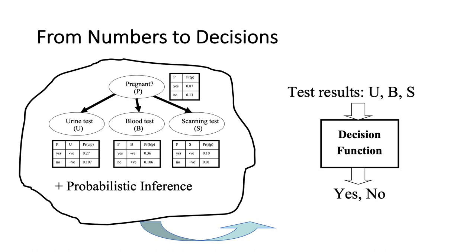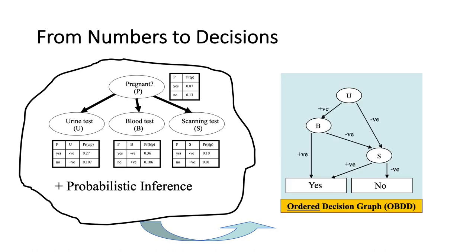I'll focus initially on capturing this discrete decision function using decision graphs, and then generalize later. A decision graph is a generalization of a decision tree - if you allow nodes to have multiple parents, you get decision graphs, which can be exponentially smaller than decision trees. These are ordered decision graphs, meaning features are tested in the same order across any path from root to leaf, which makes a number of operations that are hard in general become polynomial - typically linear.